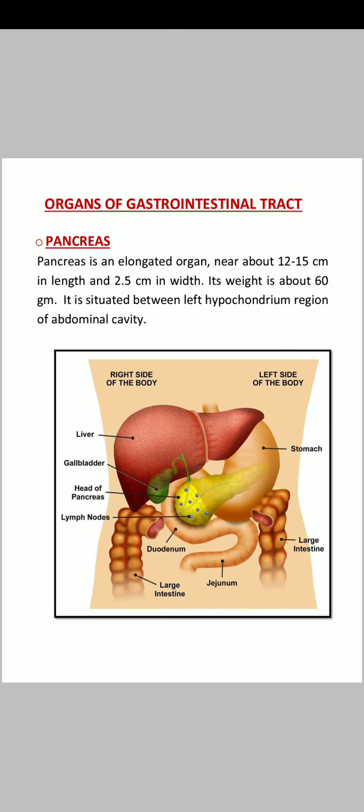So let's see what the pancreas is. Pancreas is an elongated organ, approximately 12 to 15 cm in length and 2.5 cm in width. It is about 60 grams. It is situated in the left hypochondrium region of the abdominal cavity. As I mentioned earlier, the abdominal cavity has 9 quadrants and the pancreas is present in the left hypochondrium region.